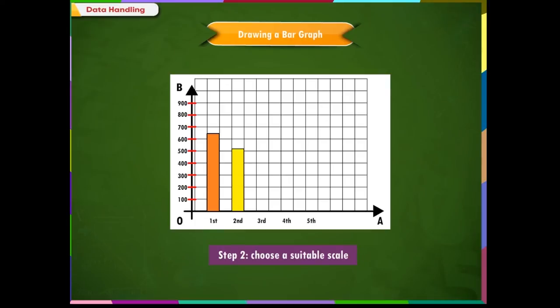Similarly, in the second week, 800 mattresses are manufactured. So, draw a vertical bar at the point representing second week on the horizontal axis. The height of the bar will be till 800.